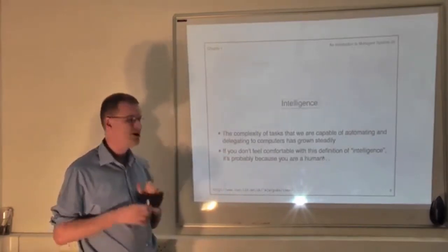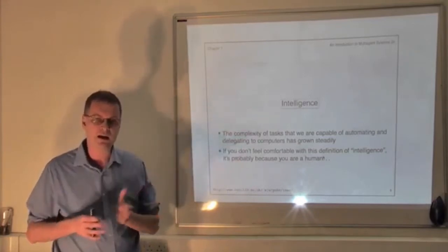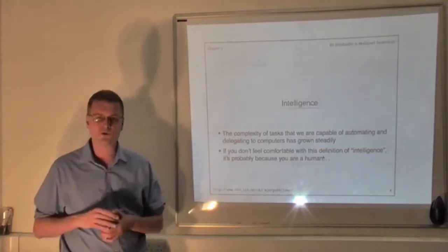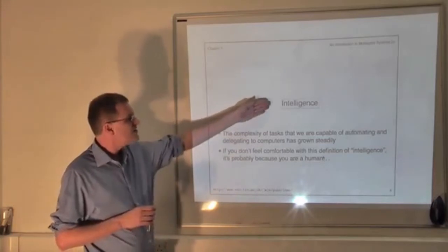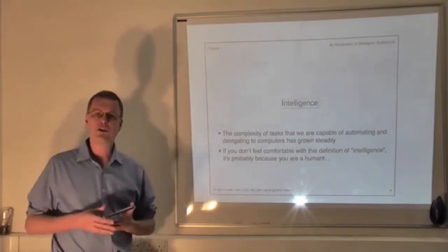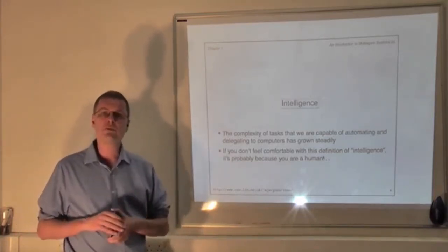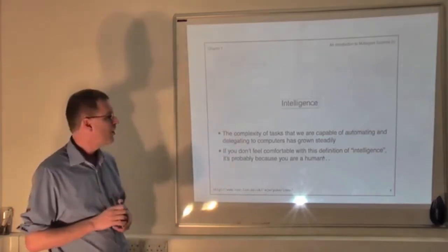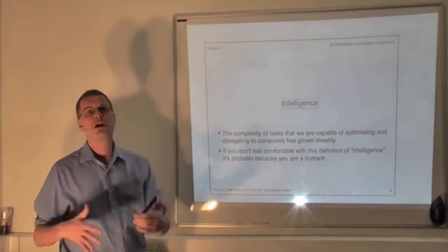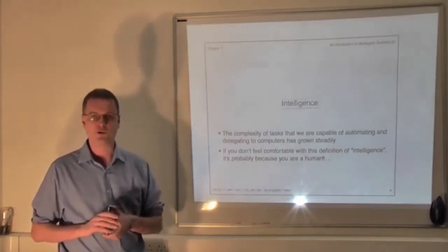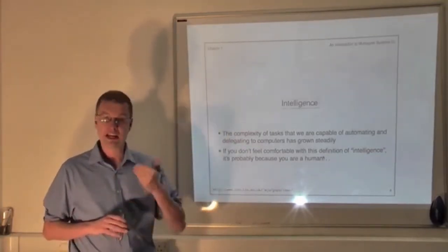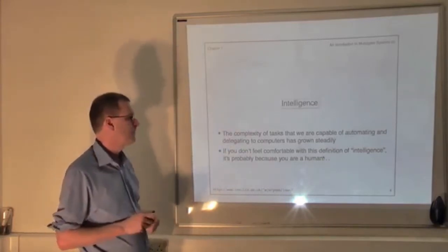The third trend is not so much a technology-push trend. Ubiquity and interconnection are very much technology push trends, but intelligence is more of a pull trend — it's what we want computers to do. Here I mean something slightly weaker than artificial intelligence. What I mean is just the idea that the complexity of the tasks that we can get computers to perform grows steadily year on year. Unlike Moore's Law, this isn't exponential growth. The complexity of tasks we are capable of automating and getting computers to solve for us grows steadily year on year.